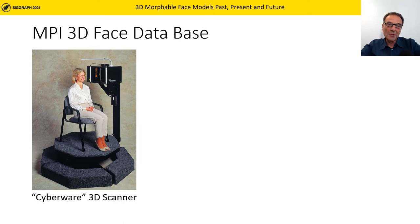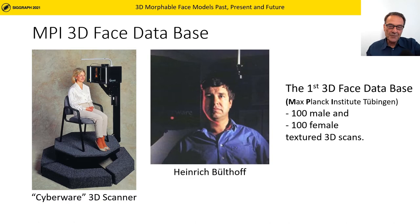The most important step towards a 3D morphable model is having access to 3D example faces. In the 1980s, a company named Cyberware produced a laser scanner that could record 3D images of faces within 15 seconds by moving the scanner head around a person's head. In 1993, in Weiss foresight, Heinrich Bülthoff — pictured sitting in the scanner — bought such a scanner to perform standardized experiments on human face perception. He built a database of 100 male and 100 female 3D scans of excellent quality.